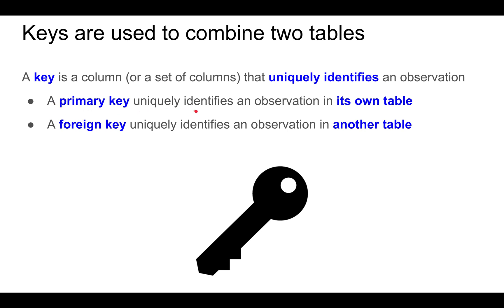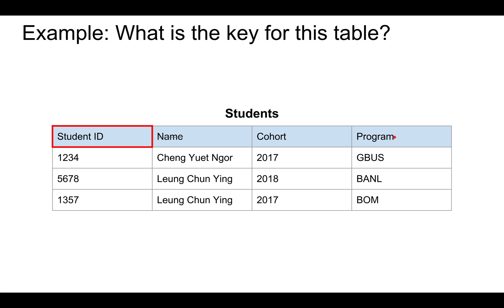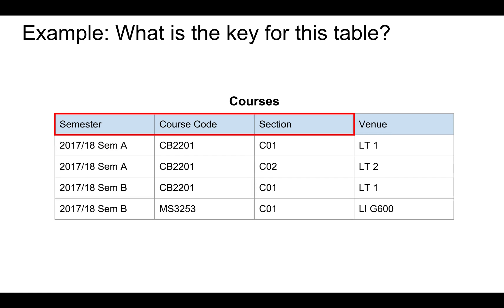A key is a column or a set of columns that uniquely identifies an observation. A primary key uniquely identifies an observation in its own table, whereas a foreign key uniquely identifies an observation in another table. For example, in this data table of students, the primary key is student ID, because every student will have a different student ID. Name is not a primary key because some students could have the same name — although it's not that common, it does happen. For the courses data table, the primary key would be the columns semester, course code, and section.